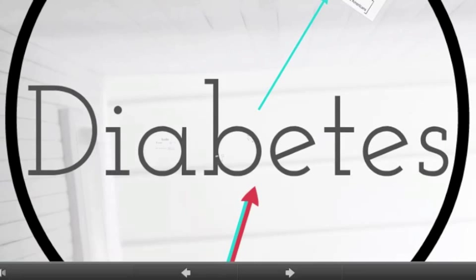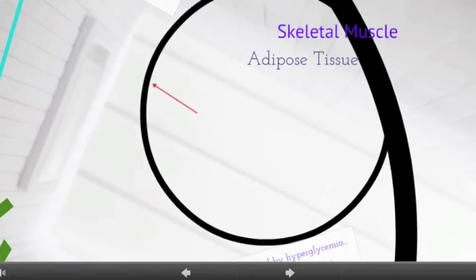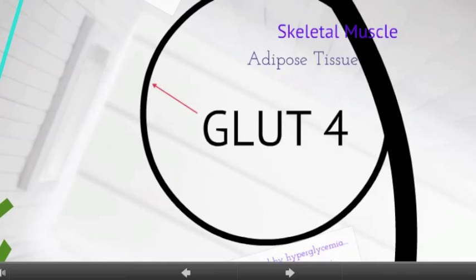Diabetes is a disease of altered chemistry and metabolism of both carbohydrates and lipids. Normally, the absorption of carbohydrates stimulates insulin secretion and the translocation of glucose transporter 4 from muscle and adipose tissues' intracellular compartments to the cell's surface, in order to increase cellular uptake of glucose.